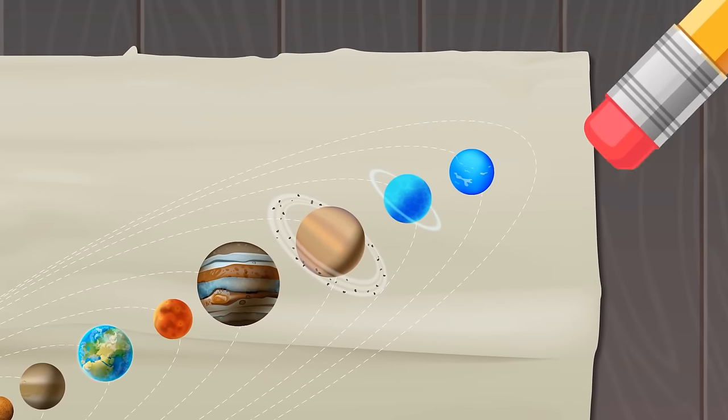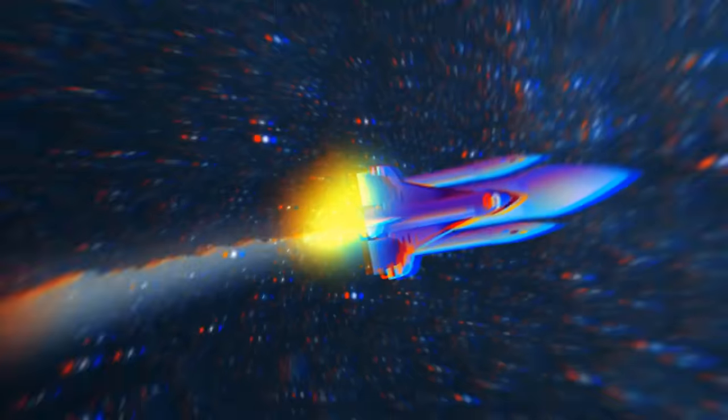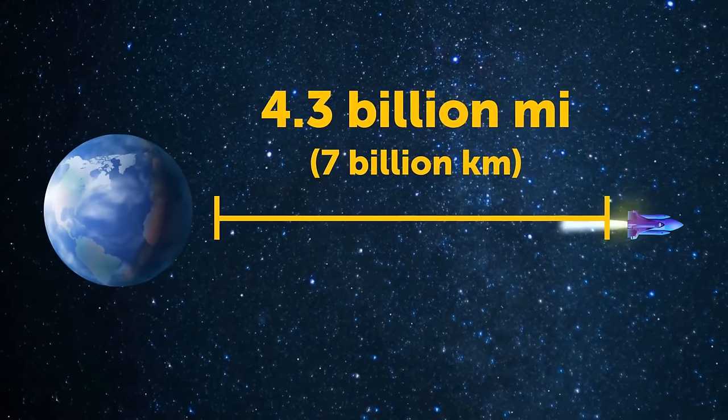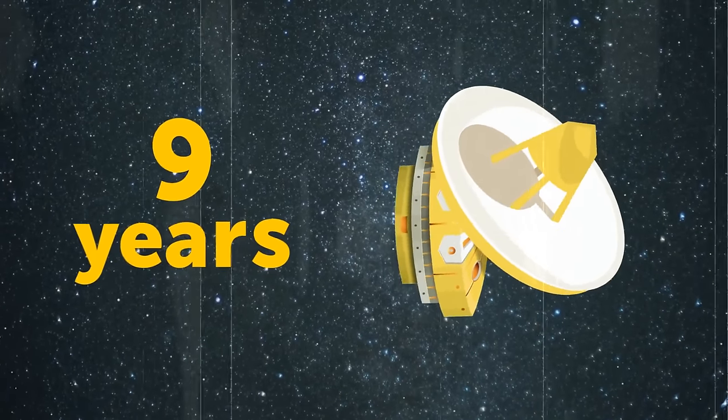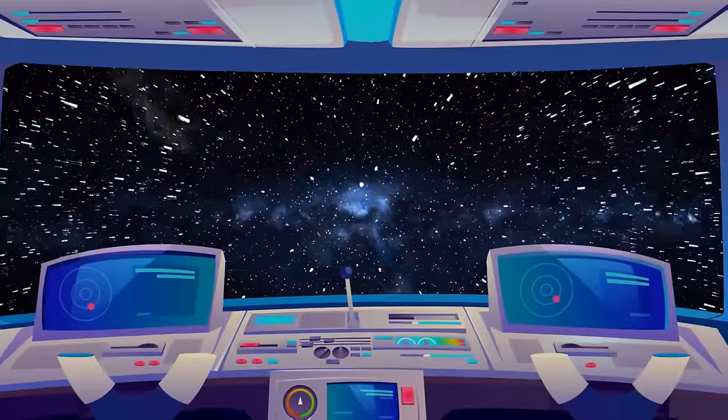We launch our faster-than-light spaceship and set off on our journey to Betelgeuse. A few seconds, and we've already traveled 240,000 miles, and now are close to the moon. That's nine and a half trips around the Earth.